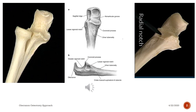Let's take a look at olecranon anatomy. There is one greater sigmoid notch, a coronoid process, lesser sigmoid notch — which means radial notch — and ulnar tuberosity. These are very important landmarks if you want to perform an olecranon osteotomy.